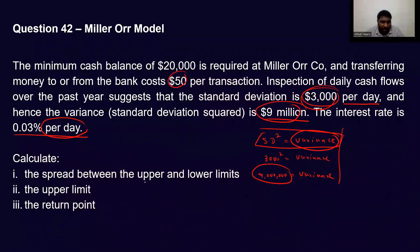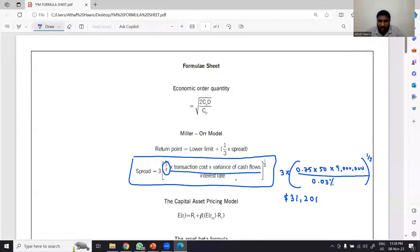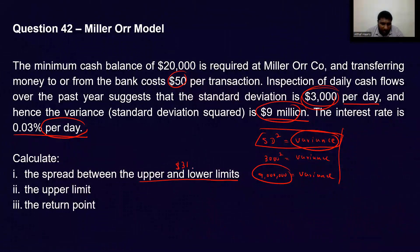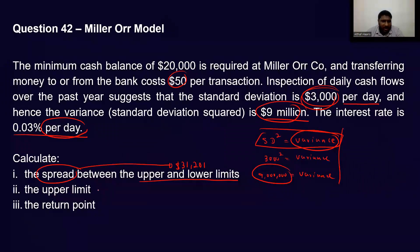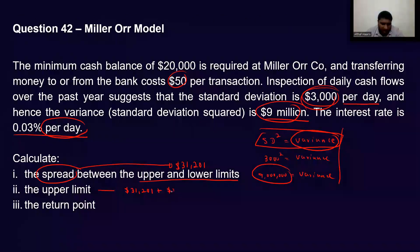So the spread between the upper limit and the lower limit is 31,201. Putting it into the graph: if the lower limit is 20,000 and the spread is 31,201, then the upper limit is 51,201. That is: 31,201 plus the lower limit of 20,000 equals an upper limit of 51,201.